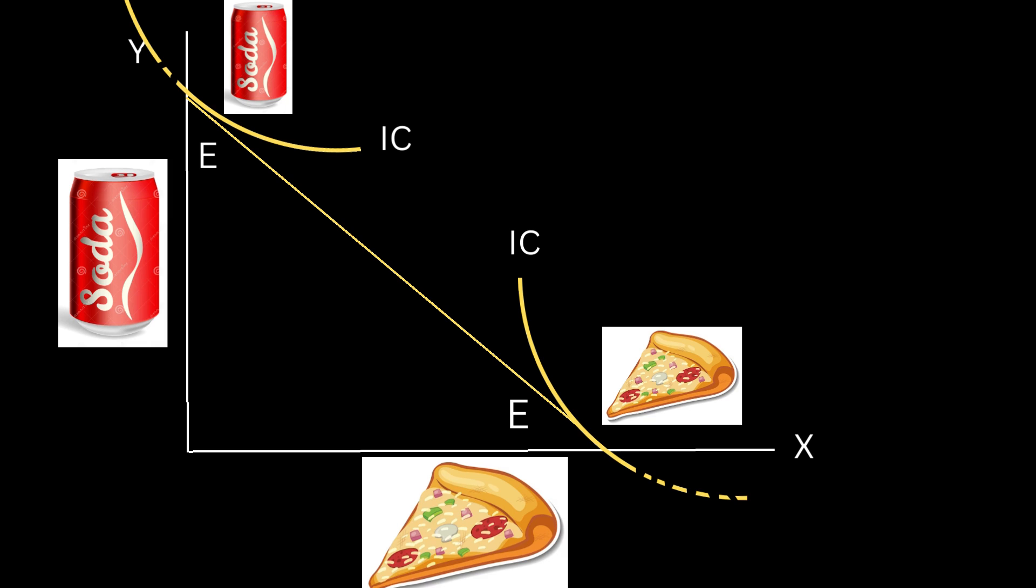Now, let's explore corner solutions. A corner solution is when the optimal bundle for consumption lies at any one of the extreme boundaries of the budget line. This means that the consumer fully spends all their income for getting only one of the goods. A corner solution occurs when a person's optimal choice is either fully utilizing one option or completely ignoring another option.